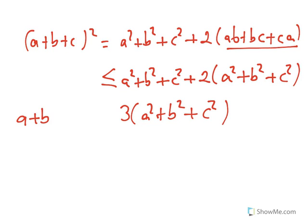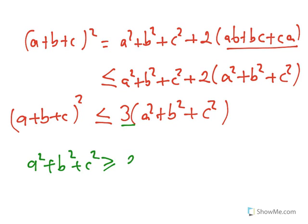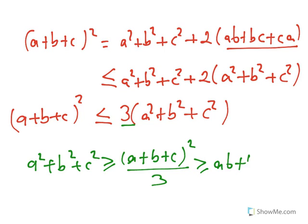Here we have a plus b plus c perfect square is less than or equal to three times a squared plus b squared plus c squared. Dividing by three gives us the left part of the inequality: a squared plus b squared plus c squared is greater than or equal to a plus b plus c perfect square over three, and that is greater than or equal to ab plus bc plus ca.